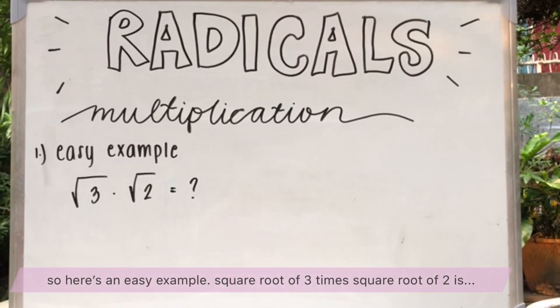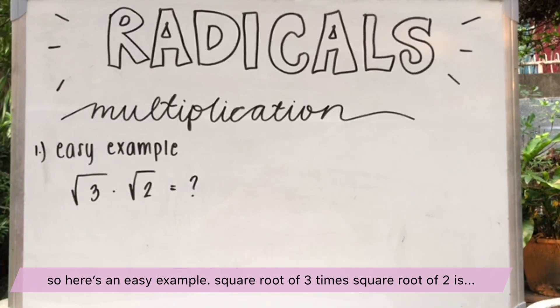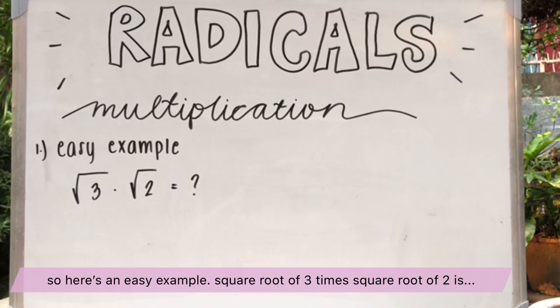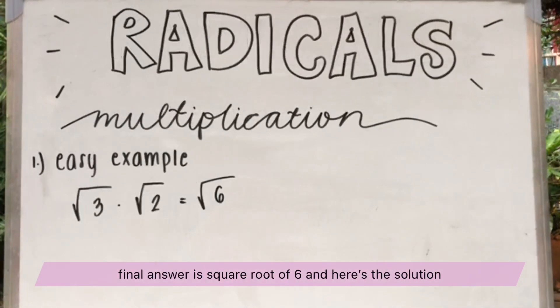So here's an easy example. Square root of 3 times square root of 2 is? Final answer, square root of 6.